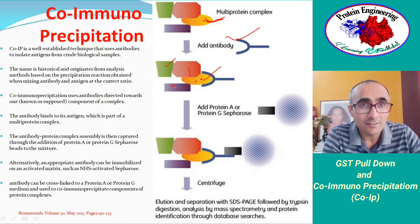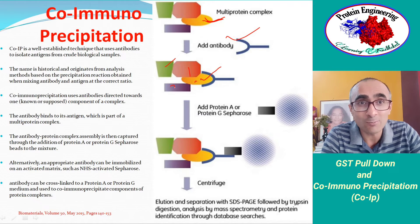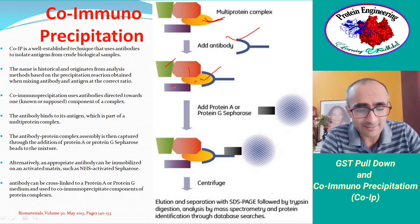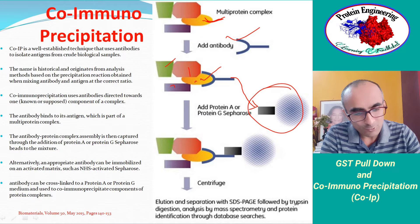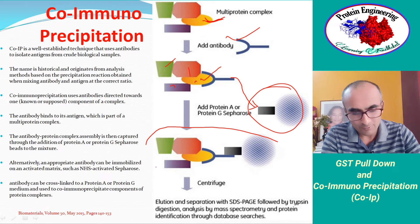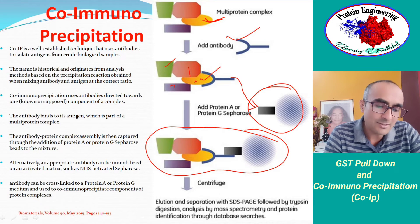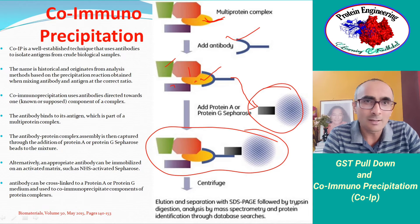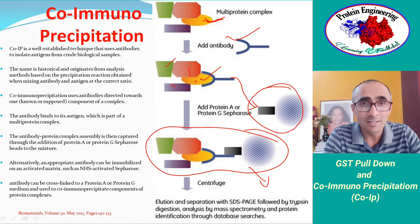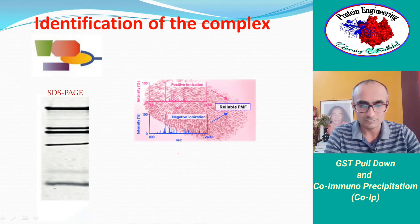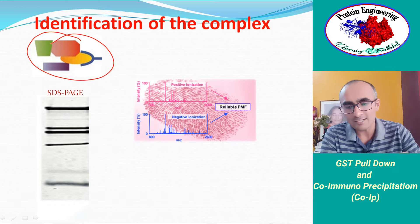After the antibody marks the complex, you add a bead containing protein A or protein G sepharose. Protein A and protein G, derived from Staphylococcus aureus, have high affinity for the Fc regions of antibodies and are commonly used for antibody purification. When these beads are added, the Fc portion of the antibody binds to protein A or G, retaining the entire complex on the bead. After centrifugation, non-specifically bound proteins are washed away and the entire complex is purified.